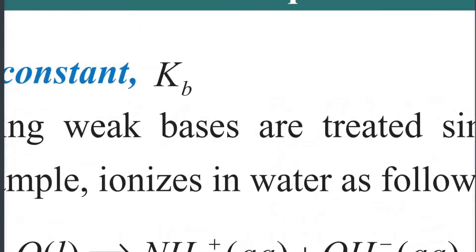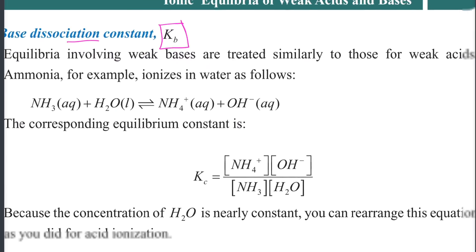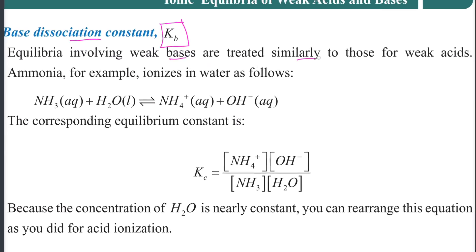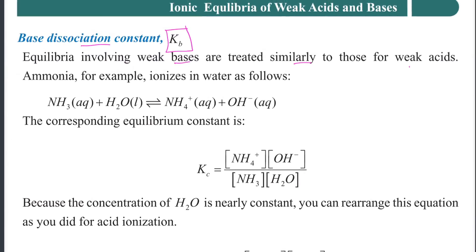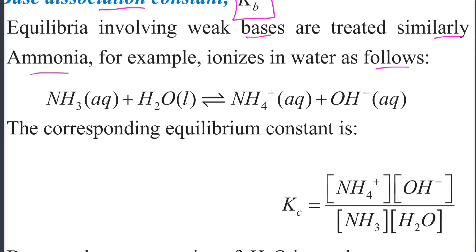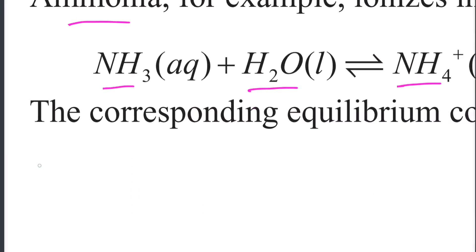The base dissociation constant is Kb. Equilibria involving weak bases are treated similarly to weak acids. If weak bases are in equilibrium, weak acids are treated in the same way. Ammonia, for example, ionizes in water. NH4 is involved in this basic equilibrium.